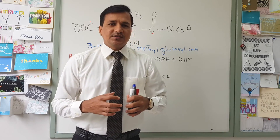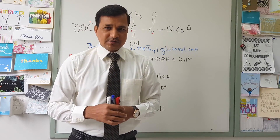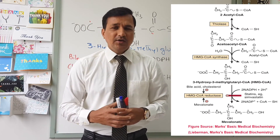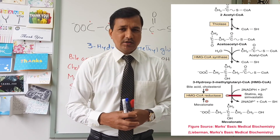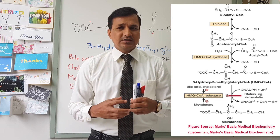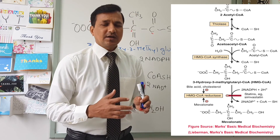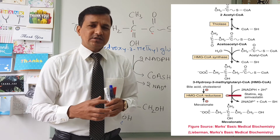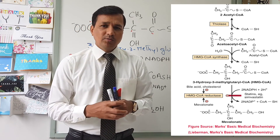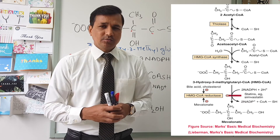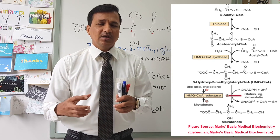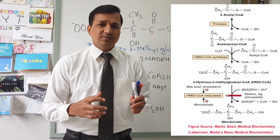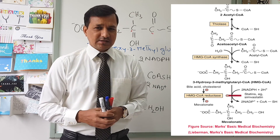Cholesterol synthesis is going on in the cytoplasm. Two molecules of acetyl-CoA will condense with one another to make acetoacetyl-CoA by an enzyme called thiolase. Then acetoacetyl-CoA will condense with one more acetyl-CoA molecule to make HMG-CoA, and this job is done by an enzyme called HMG-CoA synthase.